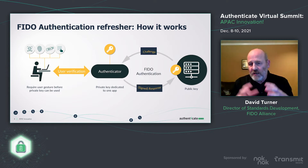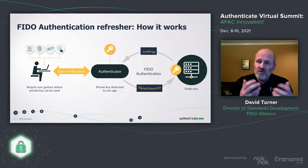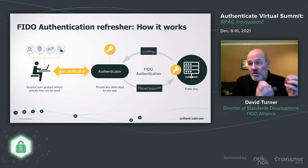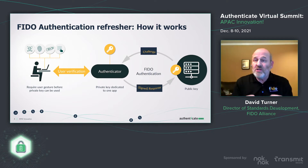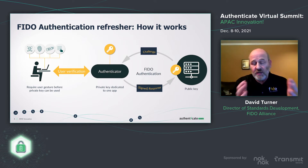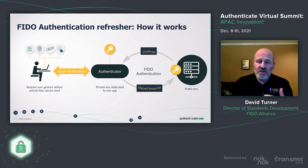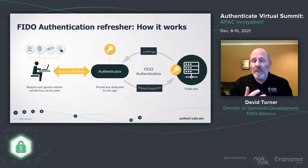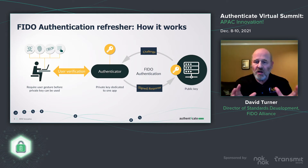Once key pairs are generated and the public key given to the relying party, when the user wants to authenticate, a challenge is sent to the authenticator. The authenticator uses its private key to sign that challenge and sends it back. The relying party uses the public key to verify the response and the user is authenticated. The password never gets exchanged in that transaction. Even if phishing or man-in-the-middle threats capture the challenge or signed response, there's nothing they can do with it — it's a very solid, well-protected system.